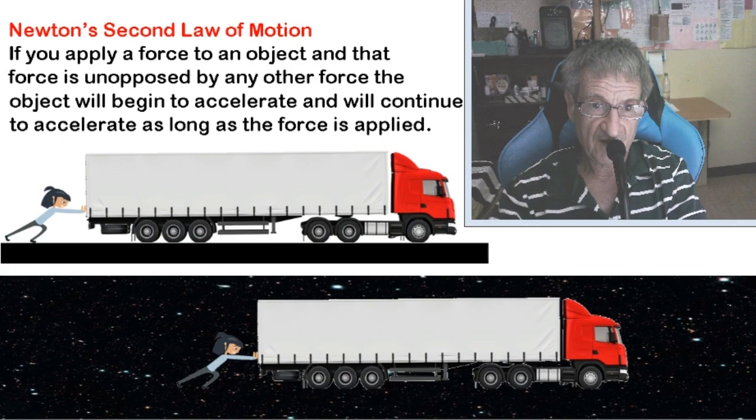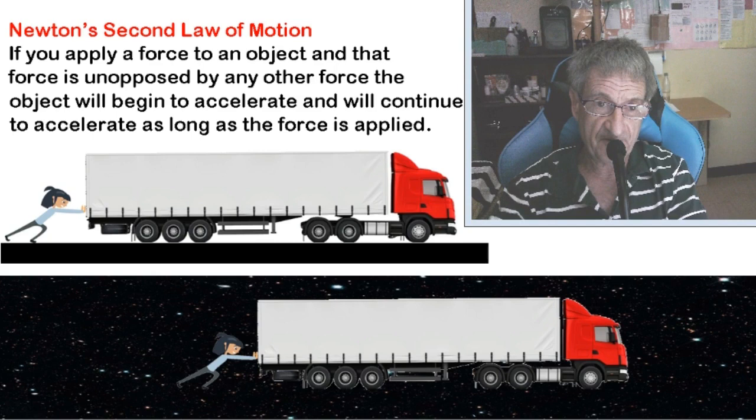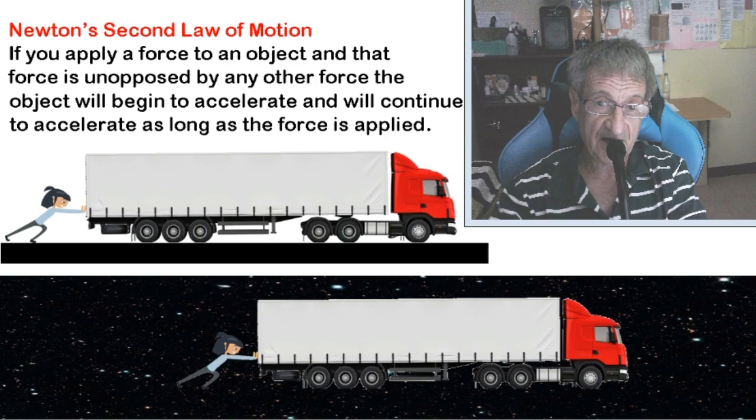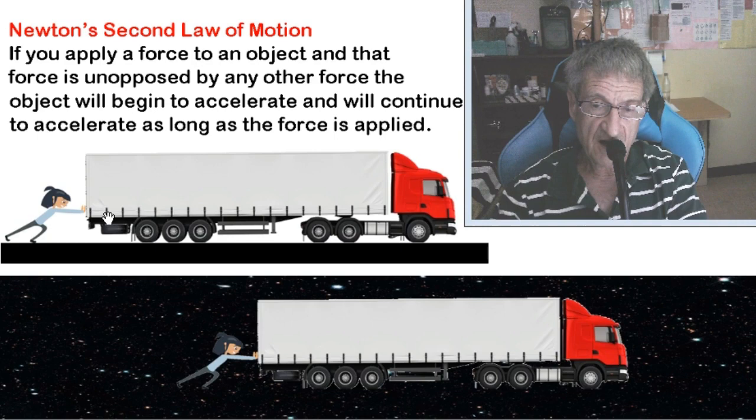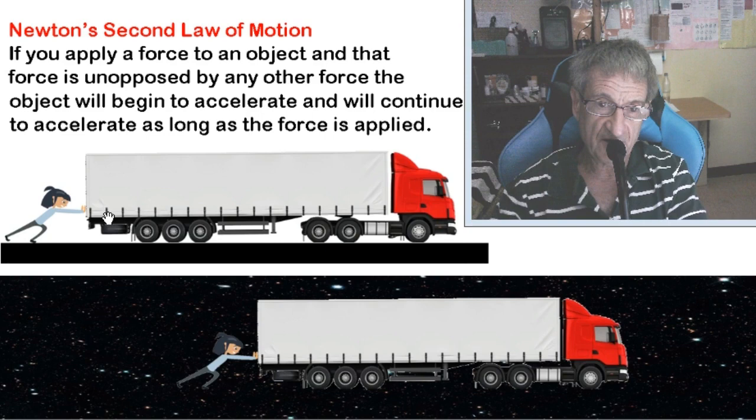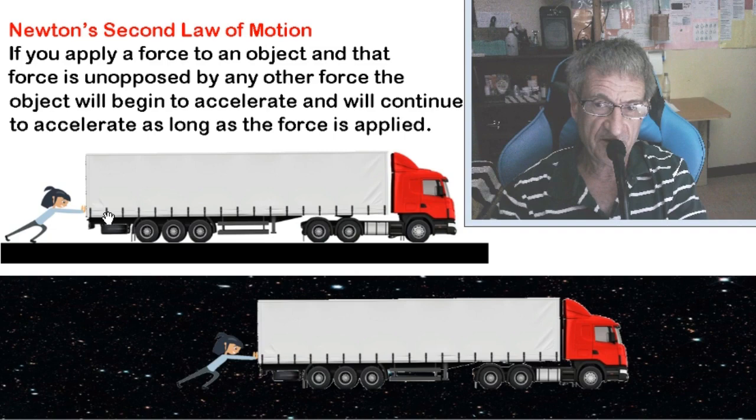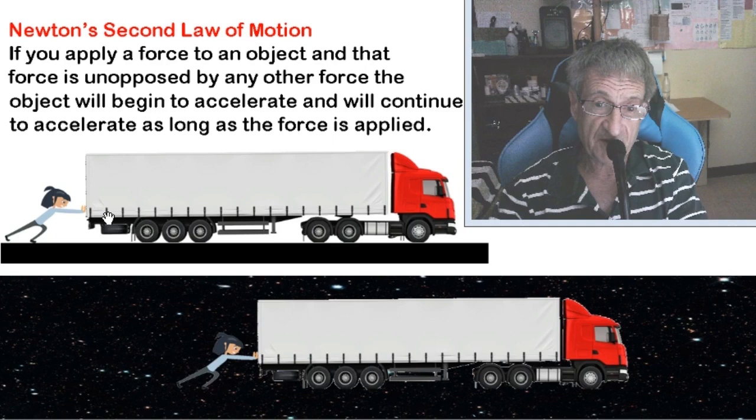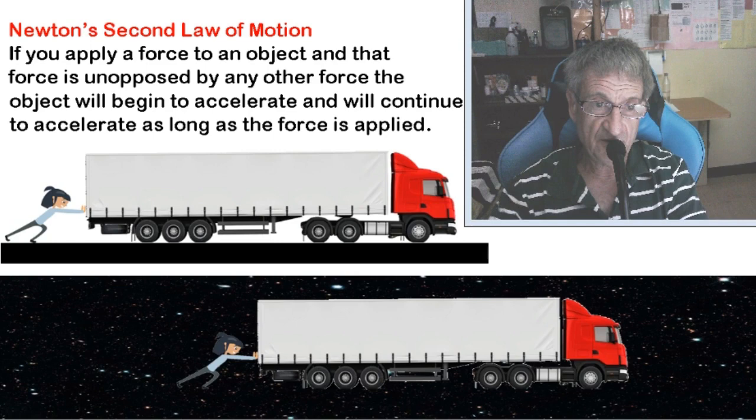Okay, so now let's look at Newton's second law. Newton's second law says if you apply a force to an object and that force is unopposed by any other force, the object will begin to accelerate and will continue to accelerate as long as the force is applied. And again, on Earth, that's confusing because if you have this little boy pushing this huge truck on Earth, he's not going to be able to push that truck because there's too much friction to the ground. But if you put that boy in space and he pushes that truck, the truck will begin to move, and it will move and gain speed and accelerate as long as that boy continues to push the truck. So that's what would happen in space. But here on Earth, to make this happen, we have to get rid of the friction.